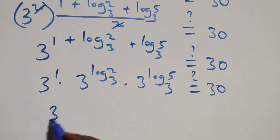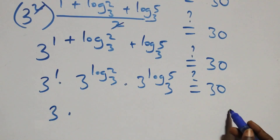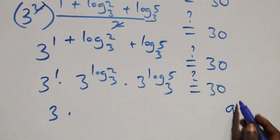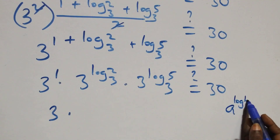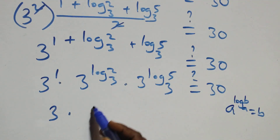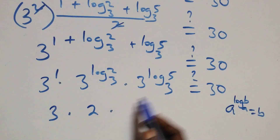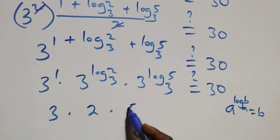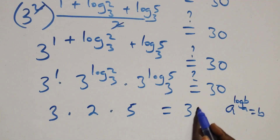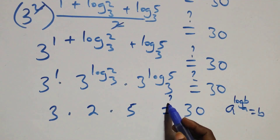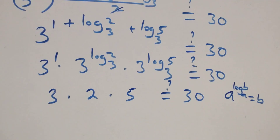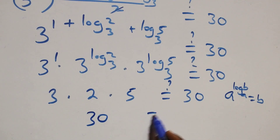Since 3 raised to power 1 is 3, and using the identity a^(log_a b) = b, we get 3^(log₃2) = 2 and 3^(log₃5) = 5. So we have 3 times 2 times 5 equals 30, which equals 30 on the right-hand side.